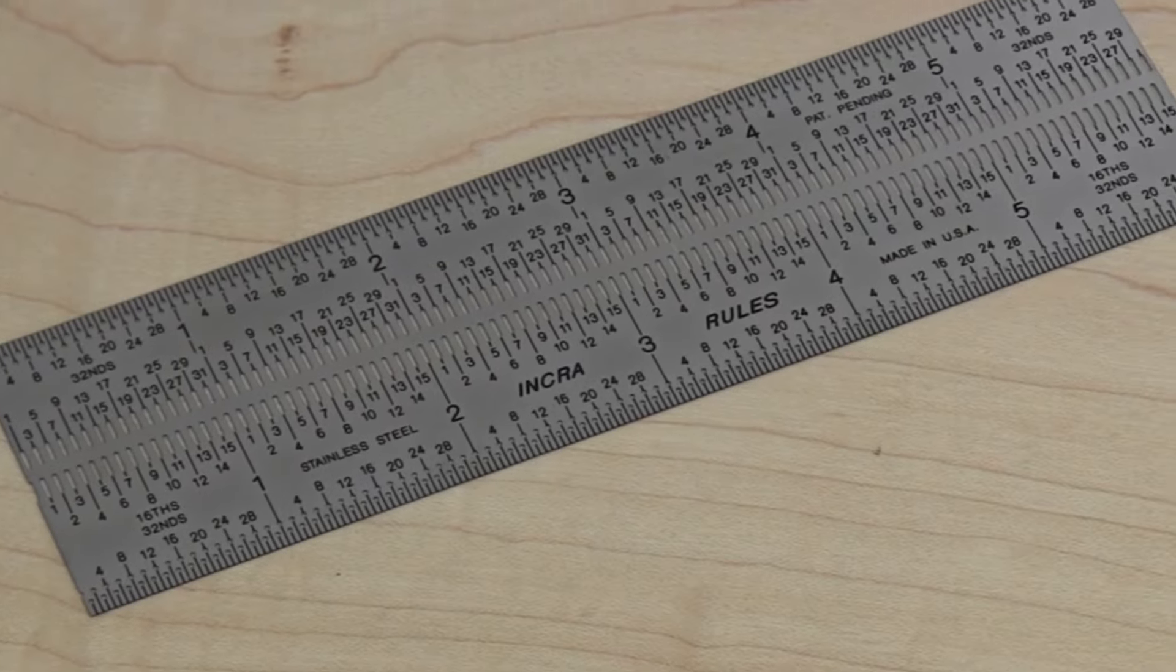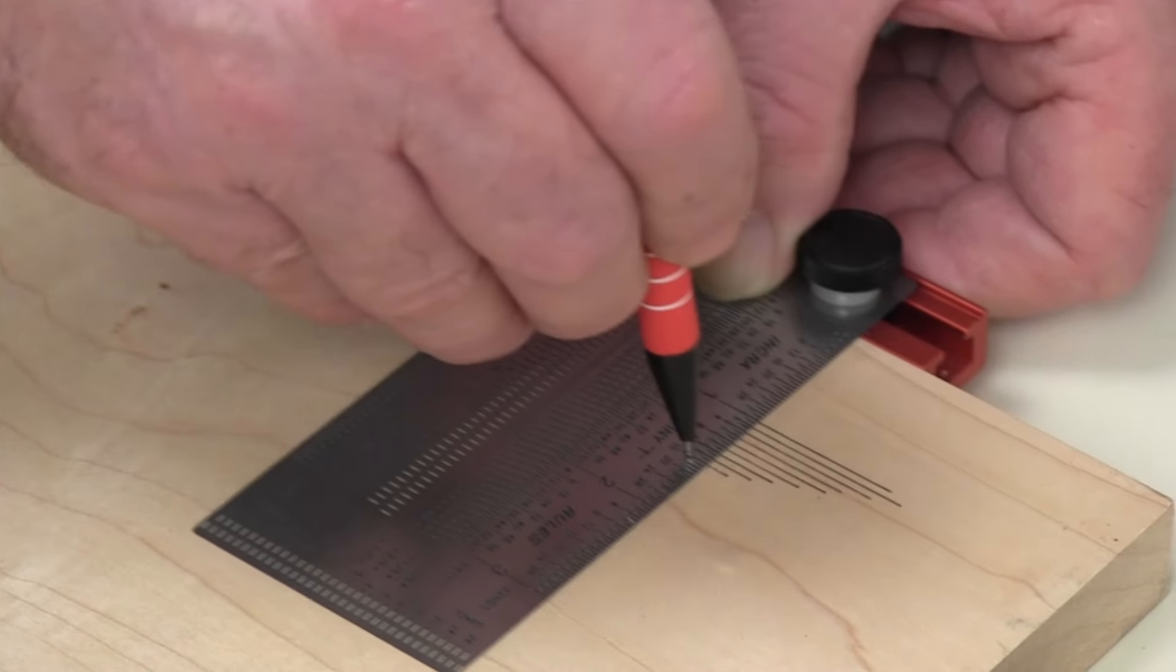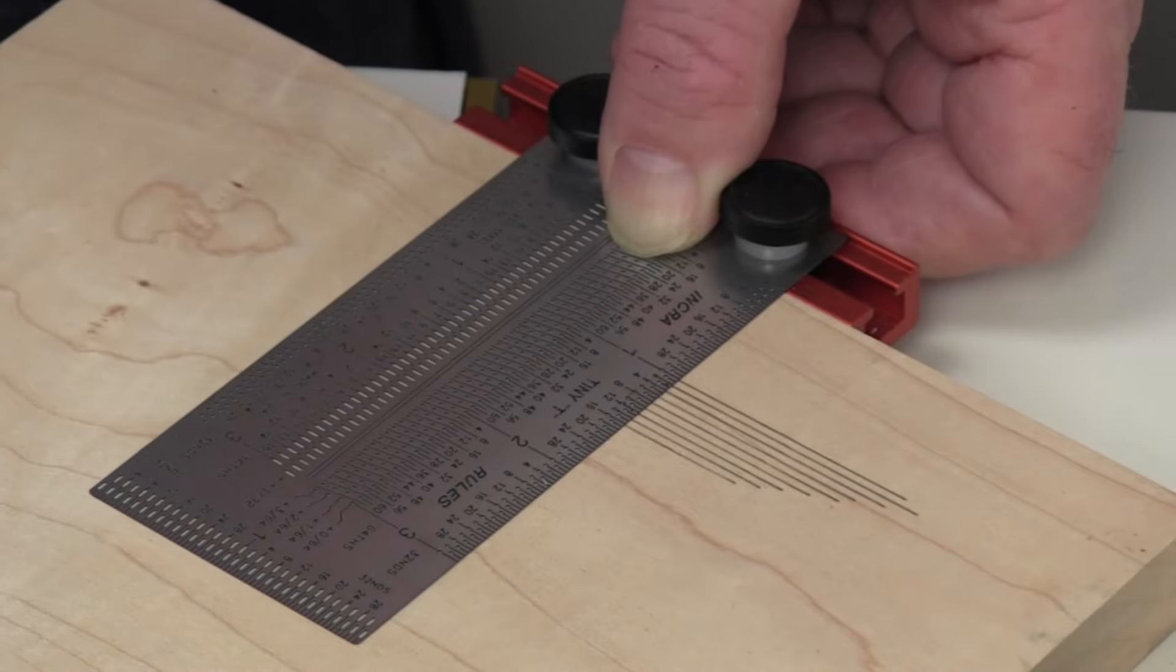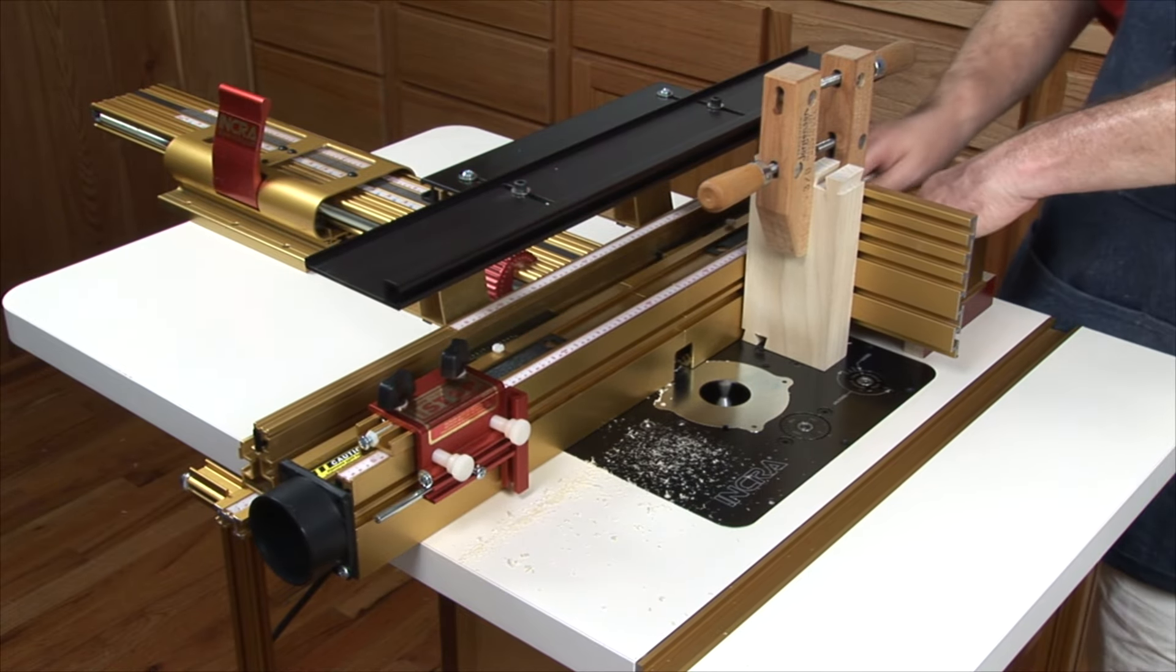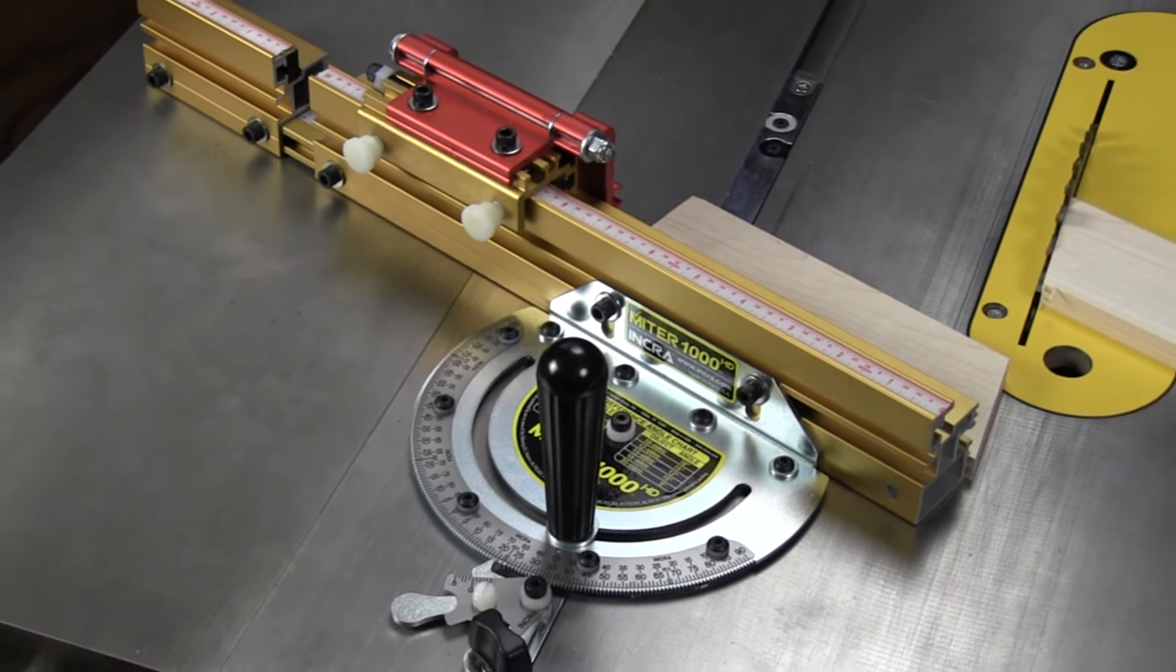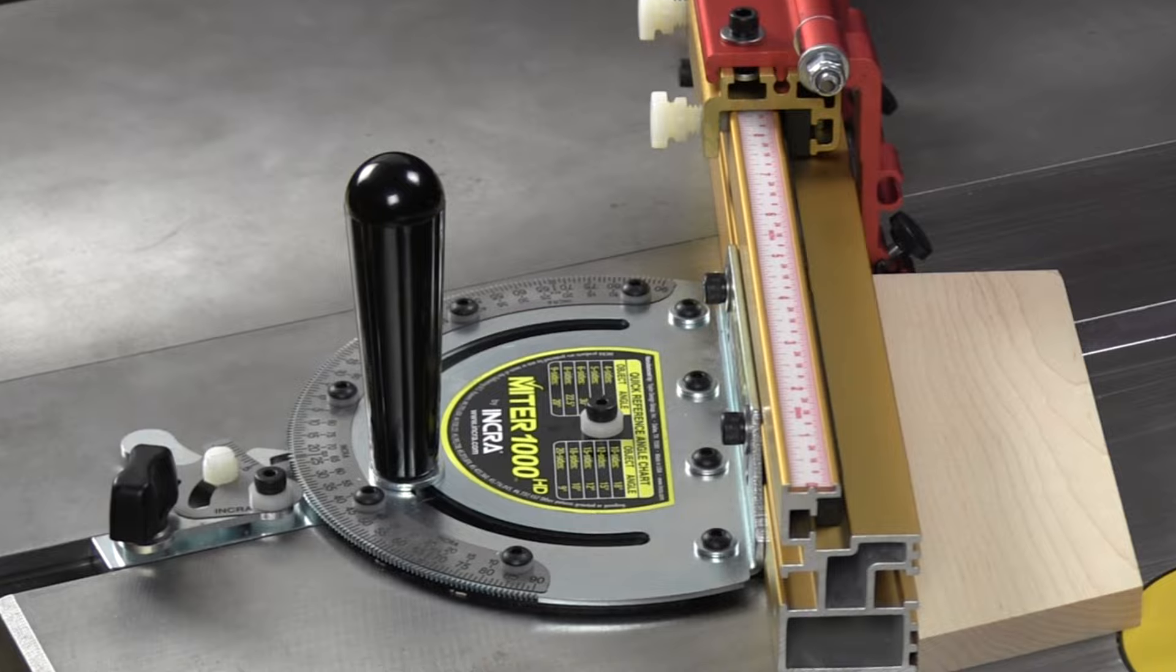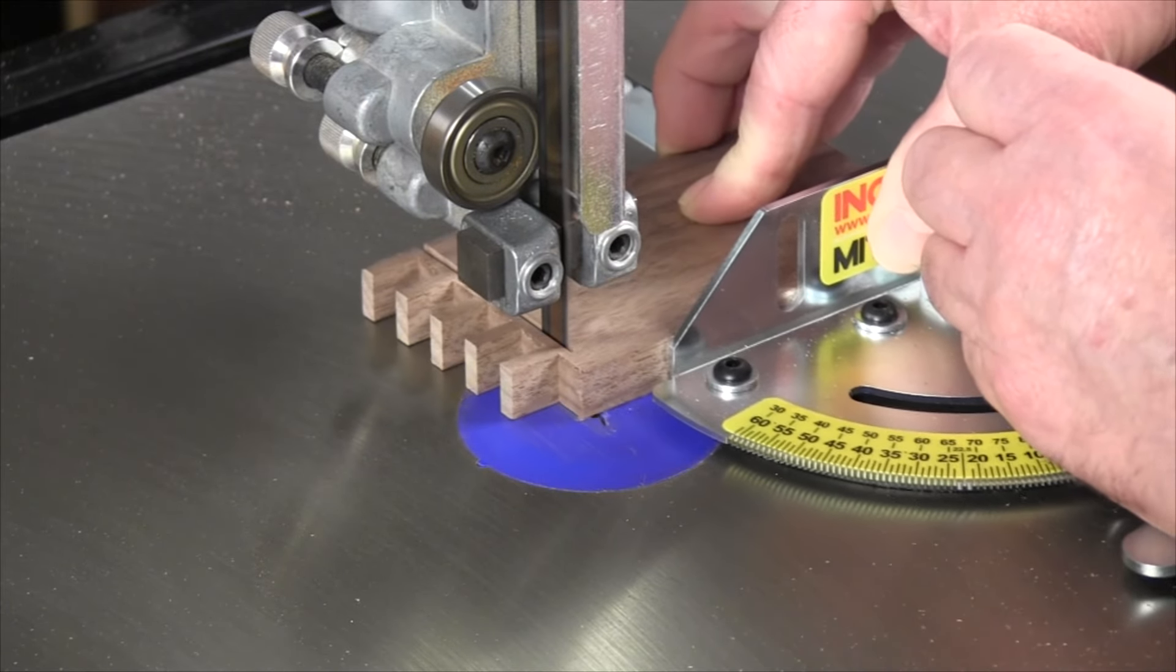Your new INCRA iBox is just one of many exciting innovations from the folks at INCRA Precision Tools. From measuring and marking to the amazing precision of our LS Positioner router table fence systems, INCRA is dedicated to making accuracy easy for today's woodworker. Visit your local INCRA dealer today to learn more about the incredible precision of INCRA miter gauges.